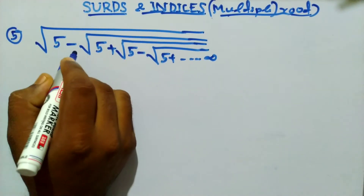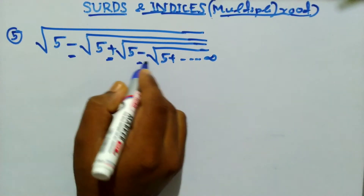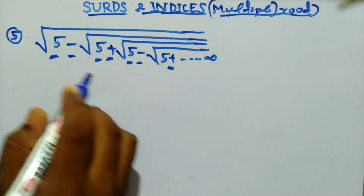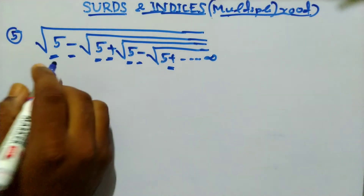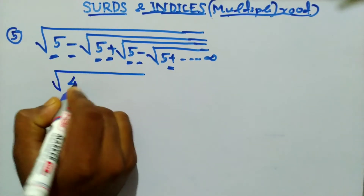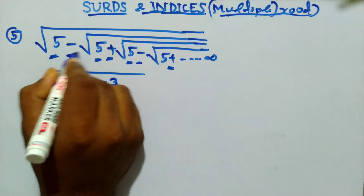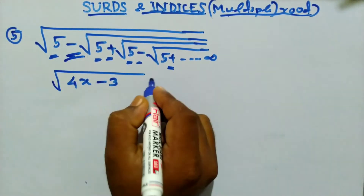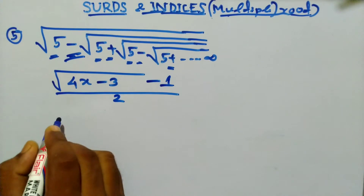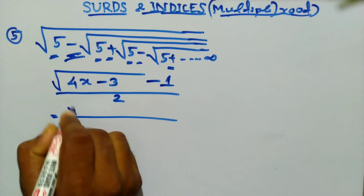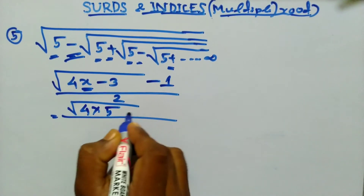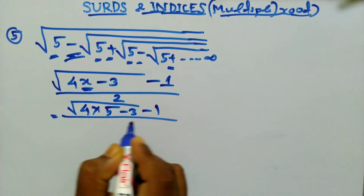Next question: here you can see two signs are repeated one by one and all the numbers are the same. When this type of question is given, apply the formula: (√(4x - 3) - 1) / 2, where the first sign is negative. Here 4 into x is 5, so we get (√(20 - 3) - 1) / 2 = (√17 - 1) / 2.